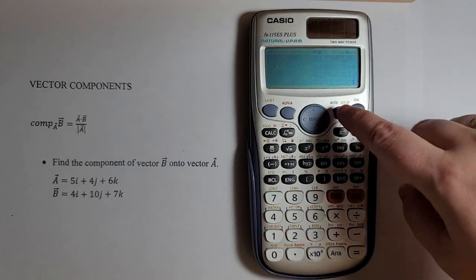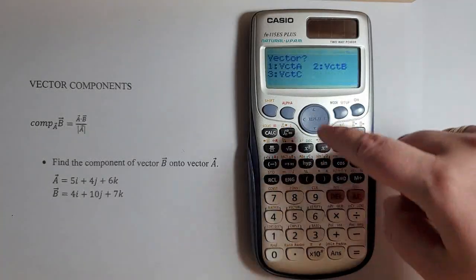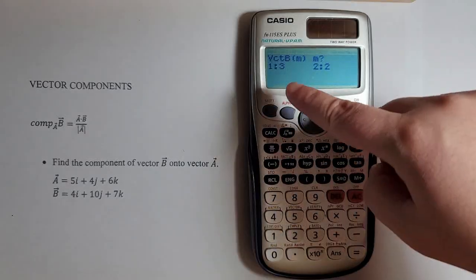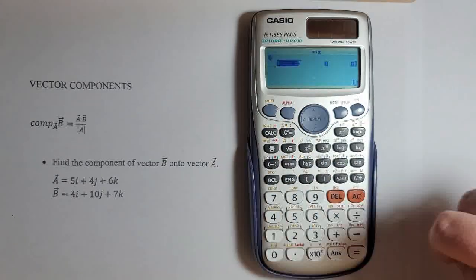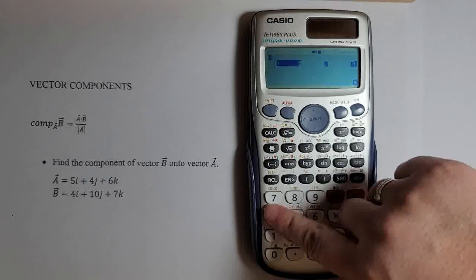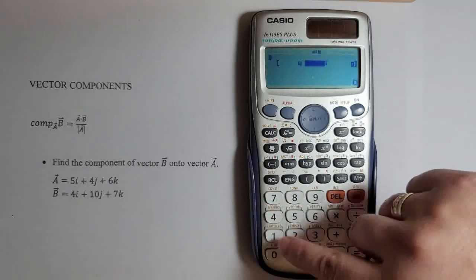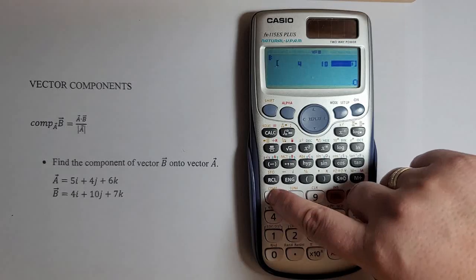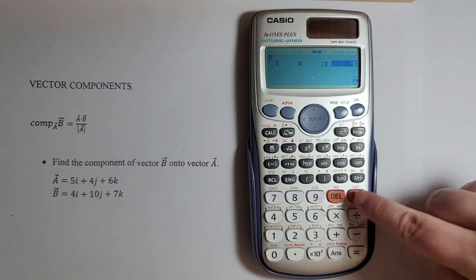I'll go to mode again, 8 for vector and now 2 for vector B. 1 for the three directions. Now we have 4 equal, 10 equal, 7 equal. AC.